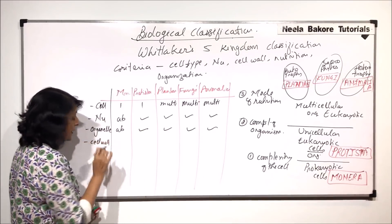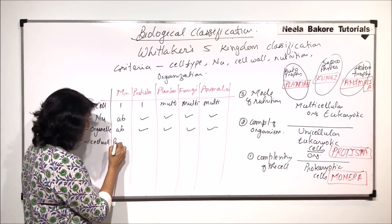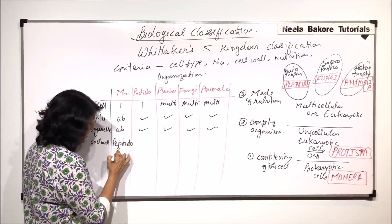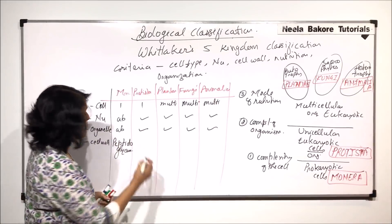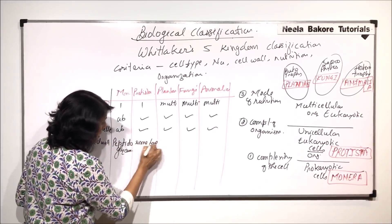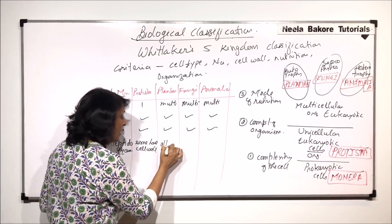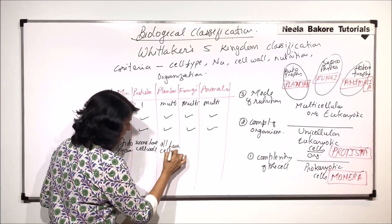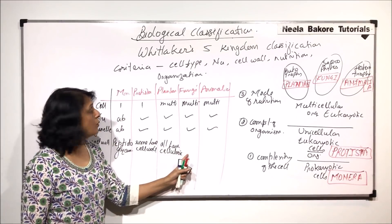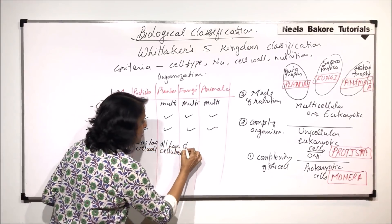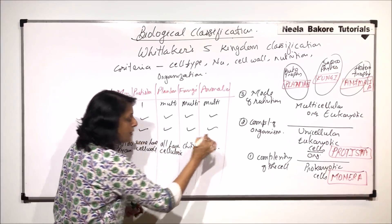Now let us consider cell walls. In Monera, the cell wall is present and made up of peptidoglycan. In Protista, some have a cell wall. In Plantae, almost all have a cell wall made up of cellulose. In Fungi, the cell wall is made up of chitin. And in Animalia, the cell wall is absent.